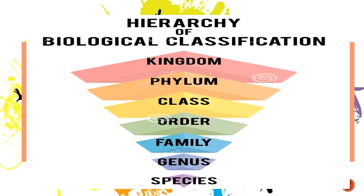So I have shown you the different definitions and descriptions of each classification. As a quick review, you have to remember the order of the hierarchy of biological classification from top to bottom — or bottom to top, whichever is easier for you. Starting from the top: kingdom, phylum, class, order, family, genus, and species. You have to remember that.